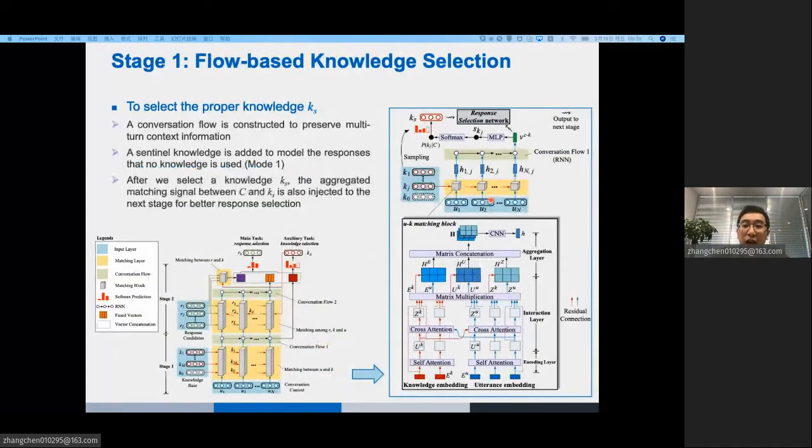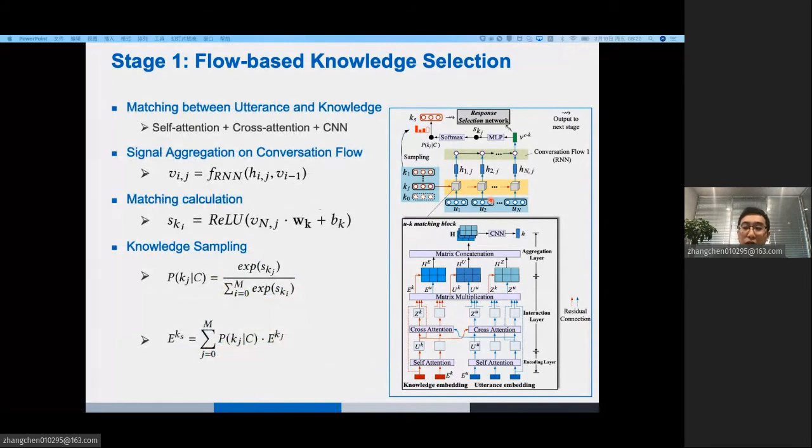For the first task, in stage 1, we propose a flow-based network to perform the matching between C and K. The contributions of this network lie in three points. First, a conversation flow is constructed in which matching between each utterance and knowledge is performed. Second, to model the response that no knowledge is used, a sentinel sentence denoting null knowledge is adapted to the knowledge base. Third, after we select a knowledge KS, the aggregated matching signal between C and KS is also injected to the next stage for better response selection.